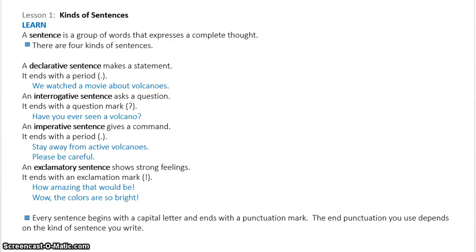An exclamatory sentence shows strong feelings. That's the difference between a declarative and an exclamatory. An exclamatory sentence is going to show great emotion and it's going to have very strong words in it. So, the examples that they give you is how amazing that would be or, wow, the colors are so bright. Those need exclamation points at the ends of those sentences. And it says, every sentence begins with a capital letter and ends with a punctuation mark. The end punctuation you use depends on the kind of sentence you write.